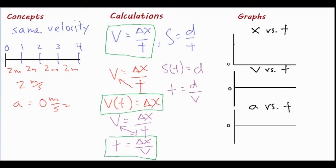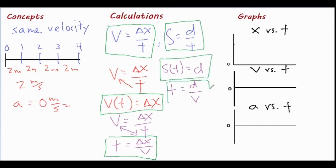That's how to isolate each of the three variables for velocity, displacement, and time — and if you're working with the speed formula, that's how you find speed, distance, and time. Now moving to the very last section, we have a position versus time graph, a velocity versus time graph, and an acceleration versus time graph.